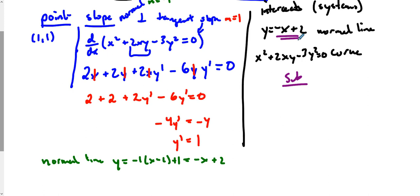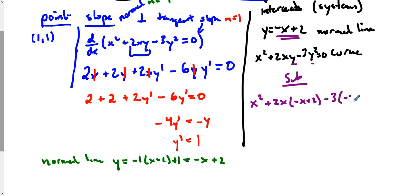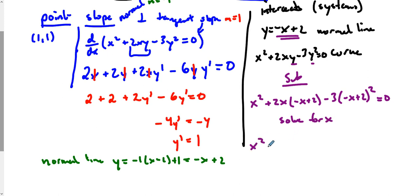To solve the system we use substitution. We're going to take y = −x + 2 and plug it in for all the y's in our equation. What we have is x² + 2x(−x + 2) − 3(−x + 2)² = 0. Now from here we're going to solve for x — we've got a bit of distribution to work through.